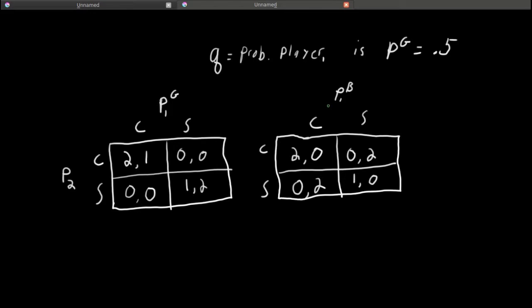What a Bayesian game is meant to capture. It's meant to capture uncertainty in a game. When one of the players, in this case it's player 2, is uncertain about some element of the game.